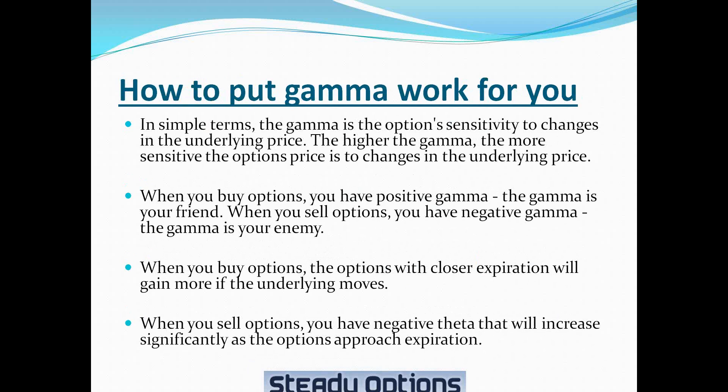When you buy options, the trade has a positive gamma and the gamma is your friend. When you sell options, the trade has a negative gamma and the gamma is your enemy. The closer we are to expiration, the higher the gamma.